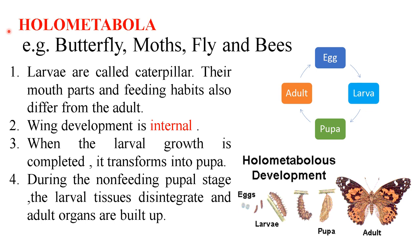The next one is holometabola. The examples are butterflies, moths, flies, and bees. These insects have four life stages: eggs, larvae, pupa, and adult. In the case of the butterfly, the larvae are called caterpillars. Their mouthparts and feeding habits are different from the adults. For example, the caterpillar of butterflies has mandibles and feeds on plant leaves, while the adults have the siphoning type of mouthparts and feed on the nectar of flowers.